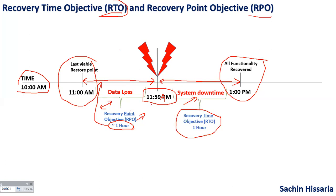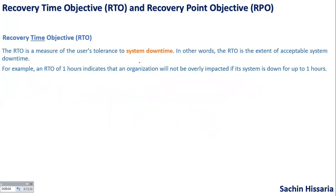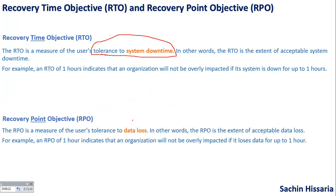These are the two terminologies of BIA — the main purpose of doing this BIA activity is to identify the RTO and RPO. Now quickly, we will see the definitions also. RTO is a measure of users' tolerance to system downtime — how much downtime a user can afford, this is RTO. And RPO is the measure of users' tolerance to data loss.